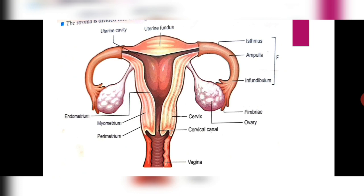Next let us discuss the uterus. The uterus or womb is a single hollow, pear-shaped structure supported by ligaments and attached to the pelvic wall. It is present between the urinary bladder and the rectum. The lower part of the uterus is very narrow and is known as the cervix, which leads into the birth canal called the vagina. Together the cervix and vagina form the birth canal. The wall of the uterus has three layers: the innermost endometrium, which is rich in blood supply and helps in the formation of the placenta during gestation; the middle layer myometrium, which is a muscular layer that helps with labour contractions and dilation during parturition; and the external perimetrium, which helps in protection.